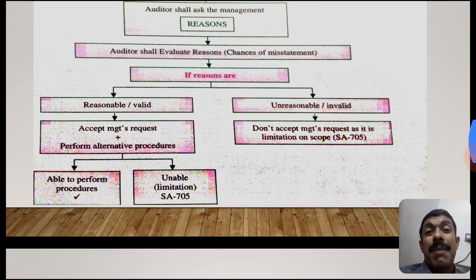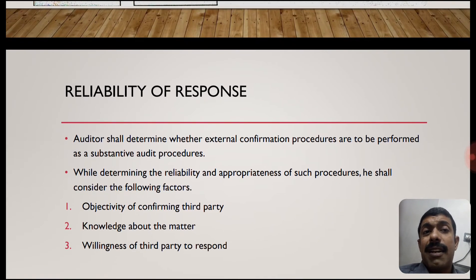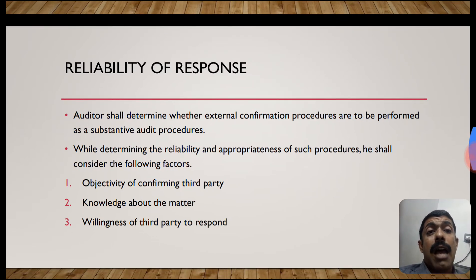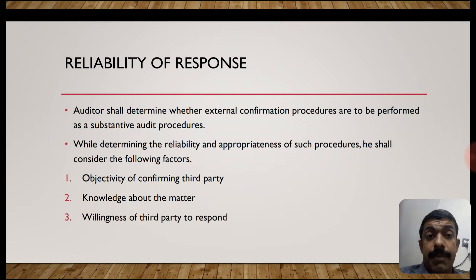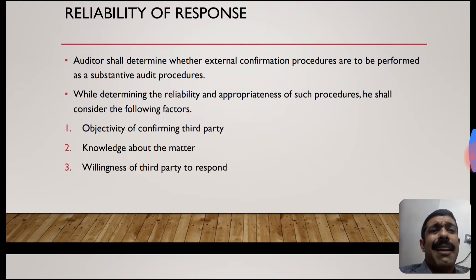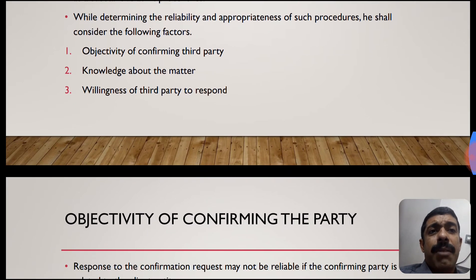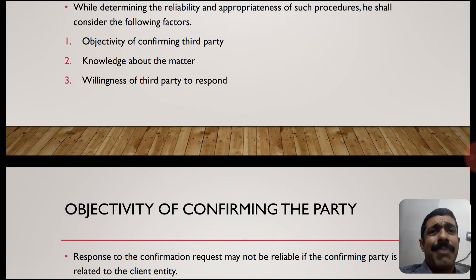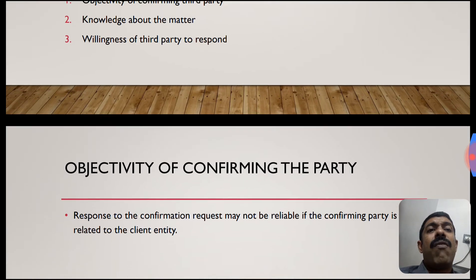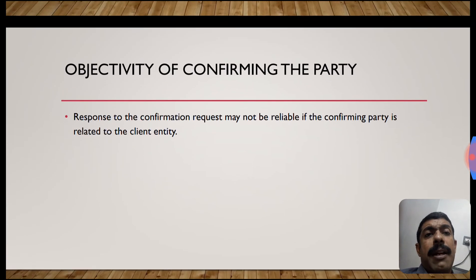Reliability of response. The auditor shall determine whether external confirmation procedures are to be performed as a substantive audit procedure, and they should be reliable. When determining the reliability and appropriateness of such procedures, the auditor shall consider the following factors: objectivity of the confirming third party, their knowledge about the matter, and the willingness of the third party to respond.